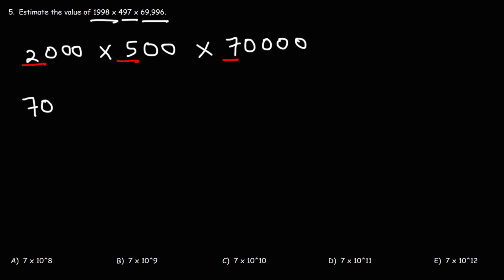So, now, we need to count the number of zeros that we have. 3, 2, and 4. 3 plus 2 plus 4, that's 9. So, we're going to add an additional 9 zeros. So, our answer is 70 billion.